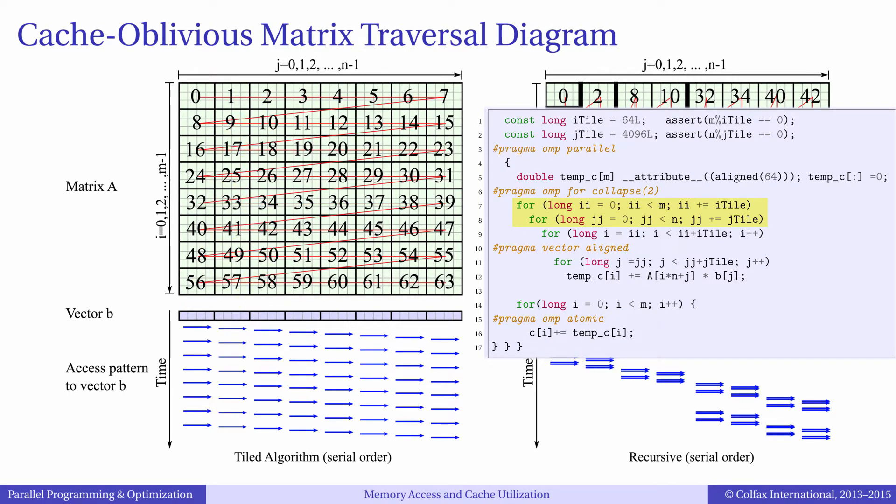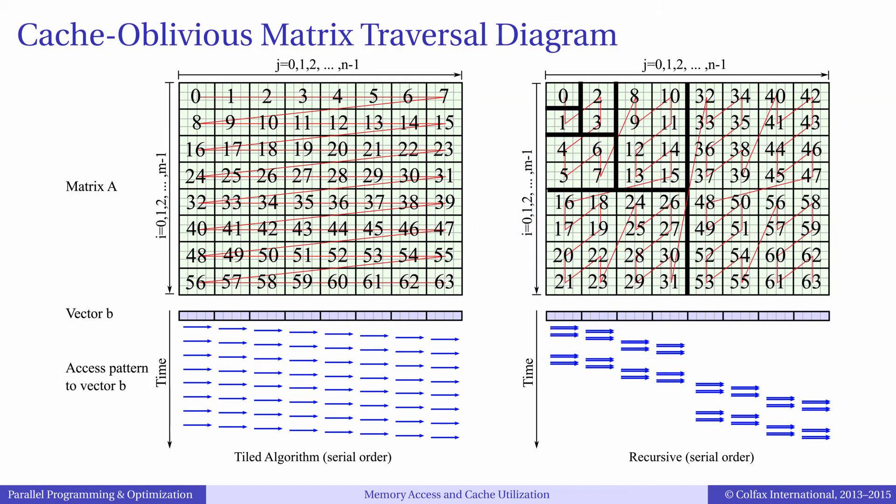Interestingly, it improves performance on the CPU, but degrades performance on Xeon Phi. For a more portable solution that improves performance on both platforms, we have to apply a different algorithm.